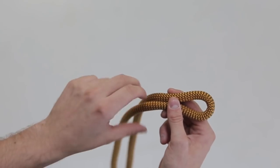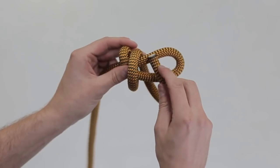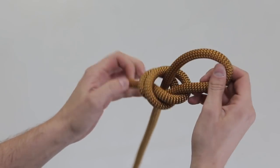Form a bite in the end of the rope. Loosely wrap the end around the bite twice. Tuck the end through these turns to complete the knot. Pull tight.